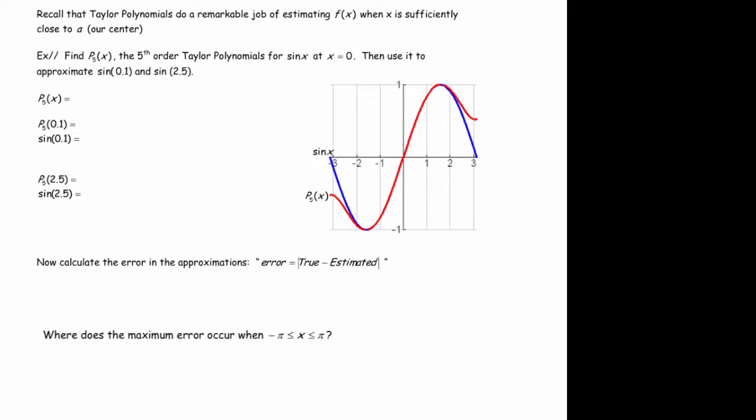In this case we're going to look at the fifth degree Taylor polynomial for sine of x at x equals zero. So hopefully you've memorized that at this point. It just follows a nice memorable pattern. Actually I'll do it in red since it will match the actual graph. So it's x minus x cubed over 3 factorial plus x to the fifth over 5 factorial.